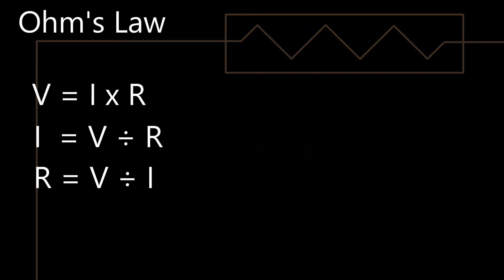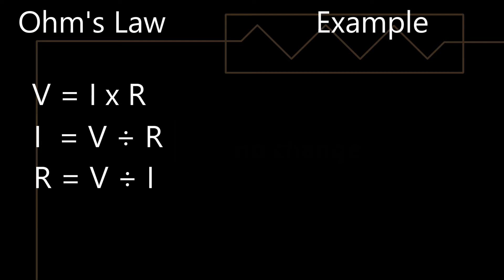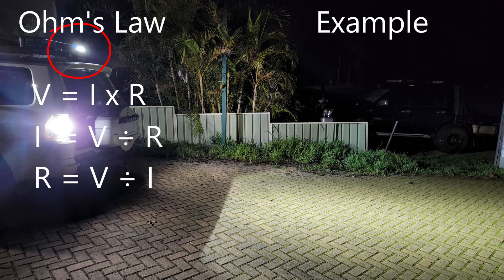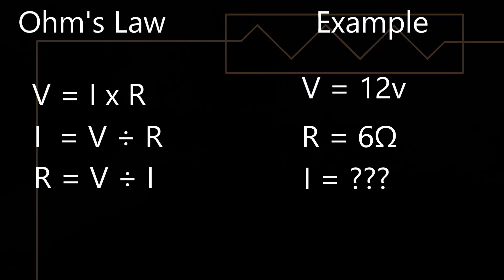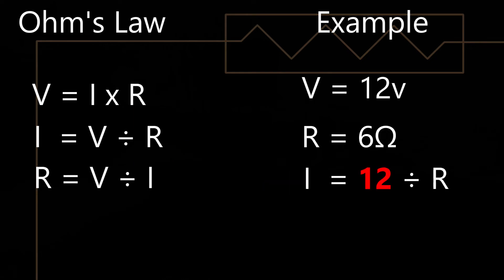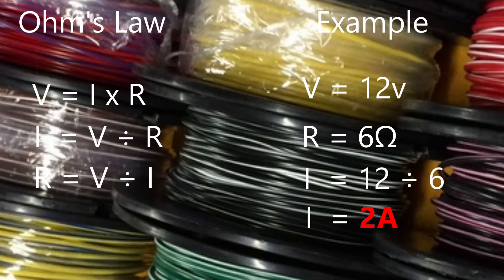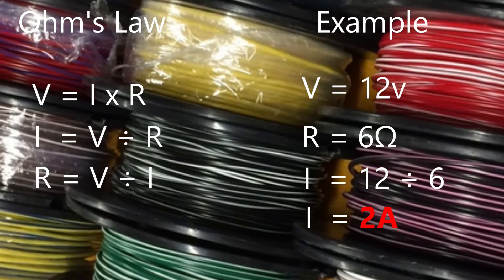In our illustration, the amount of electrical current flowing through a circuit is directly affected by voltage and resistance. For example, imagine you're wanting to install an additional reversing light on your vehicle, and you want to make sure the wiring will be thick enough. Your vehicle runs on 12 volts, and the new light has a resistance of 6 ohms. Using the formula current equals voltage divided by resistance: 12 volts divided by 6 ohms gives us 2 amps of current flowing through that globe.